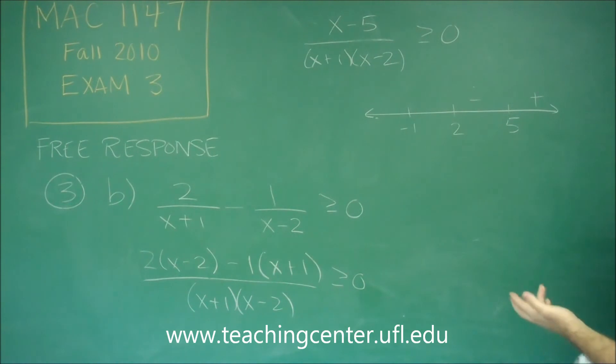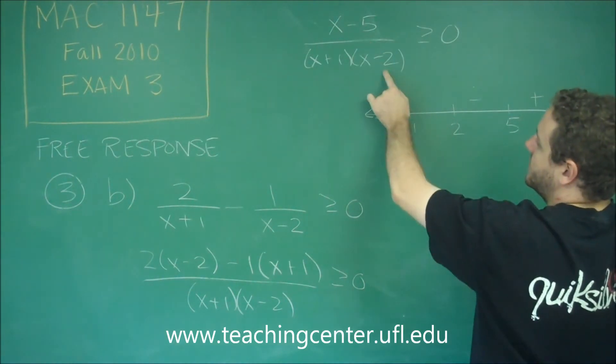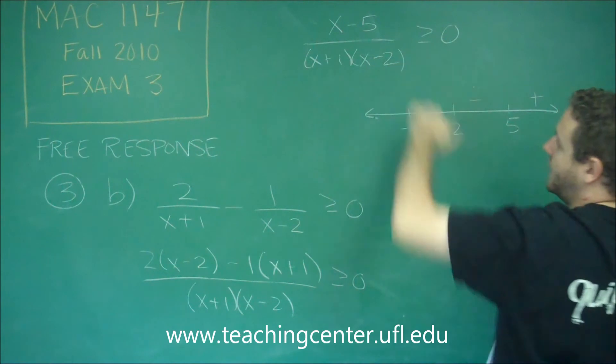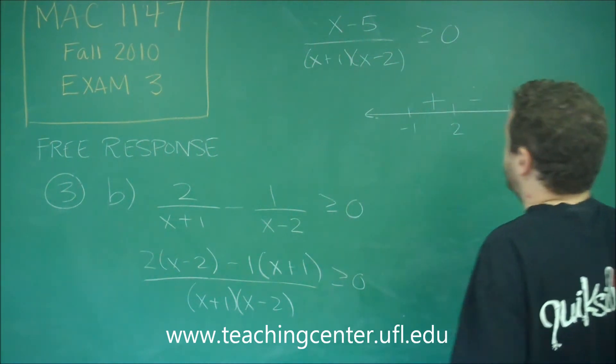Something between negative 1 and 2, let's say 0. We are going to get negative, negative, and positive. We have 2 negatives that will make a positive there. That will give us a positive.